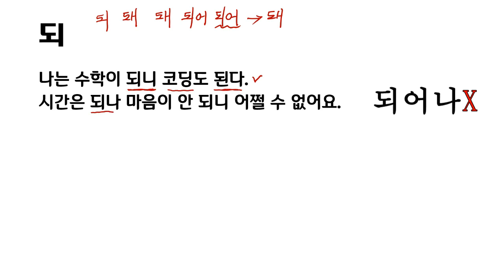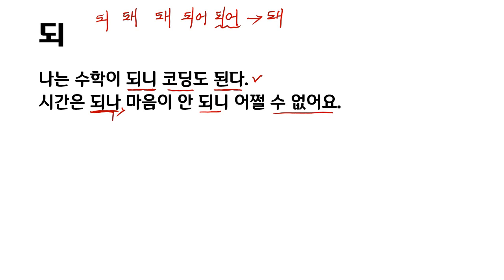시간은 되나. 마음이 안 되니. 어쩔 수 없어요. 되나 — 나 means 'but.' 시간은 되나 means 'time is available but my mind is not available.' 안 되니. I have no other way.